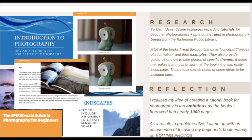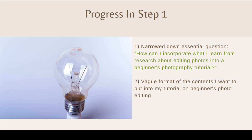As for my reflection for step one, I realized that my idea of creating a tutorial book for photography was too ambitious, as the books I borrowed from the library on beginner photography had nearly a thousand pages. To problem solve, I came up with the idea of focusing my tutorial book entirely on editing photos. In summary, I narrowed down the essential and inquiry question to: how can I incorporate what I learned from research about editing photos into a beginner's photography tutorial? I now also have a vague format of the contents I want to put into my tutorial book.